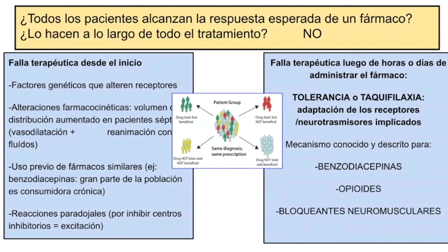El fenómeno de tolerancia o taquifilaxia está súper descripto y conocido, también encontrado en la bibliografía como resistencia. Cuando el receptor a ese fármaco se agota, se desacopla, no responde más, y el fármaco no puede continuar con esa señal que provoca su efecto farmacológico. Esto está descripto para las benzodiazepinas, para los opioides, y para los relajantes neuromusculares.